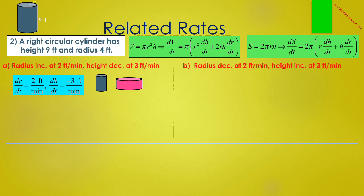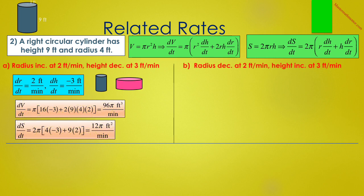In A, the radius is increasing at 2 feet per minute and the height is decreasing at 3 feet per minute, so dR/dt equals 2 and dH/dt equals negative 3. The cylinder goes from blue to red. So dV/dt equals π times the quantity 16 times negative 3 plus 2 times 9 times 4 times 2, which turns out to be 96π cubic feet per minute. And dS/dt equals 2π times the quantity 4 times negative 3 plus 9 times 2, which is 12π square feet per minute. Both the volume and the surface area are increasing despite the fact that the height is decreasing.